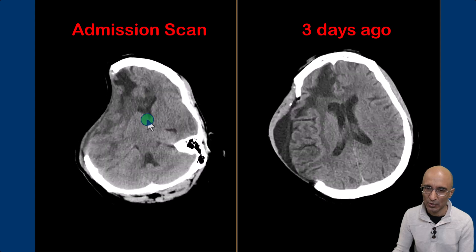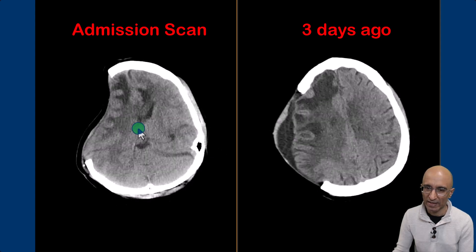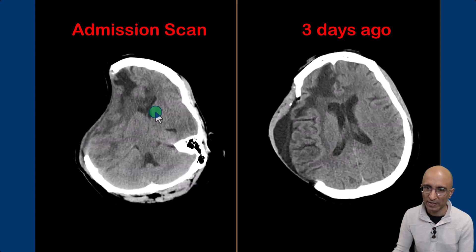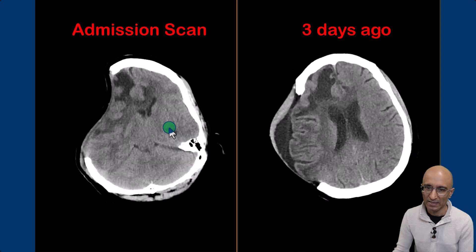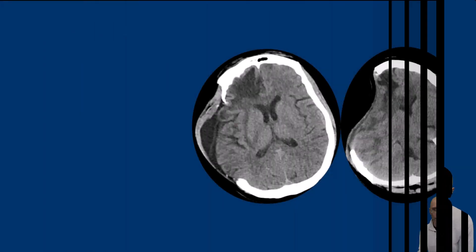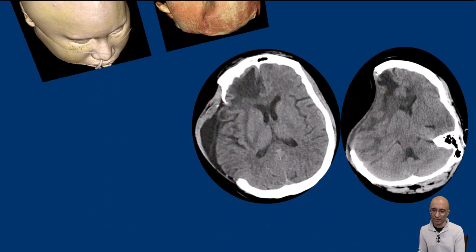You can see the mass effect and effacement of the right lateral ventricle. The left lateral ventricle is mildly dilated. Imaging appearances are consistent with sunken skin flap with paradoxical brain herniation.